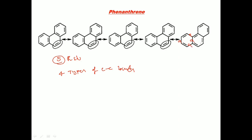The bonds labeled 'a' form one group of equal bond lengths. The bonds labeled 'b' form another group — four bonds of equal length. The bonds labeled 'c' — three bonds of the same length. And finally bond 'd' has the least bond length because it has four times double bond character. Bond 'c' has the highest bond length because it has more times single bond character.